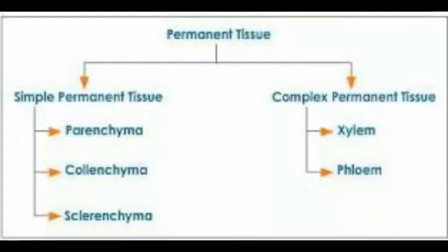The process of conversion of meristematic tissues into permanent tissue is called differentiation. Permanent tissues or matured tissues are classified into two broad categories: simple permanent tissue and complex permanent tissues. Simple permanent tissues are again classified into three types: parenchyma, collenchyma, and sclerenchyma.